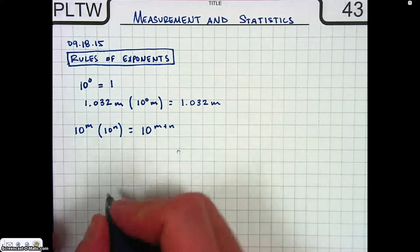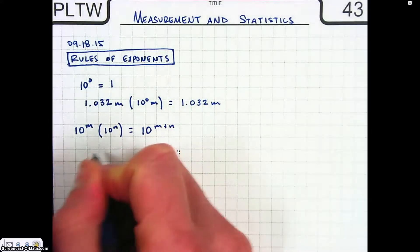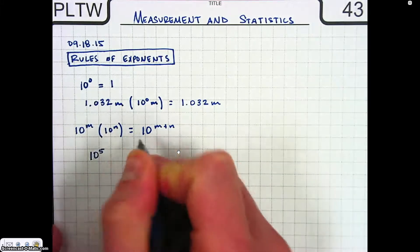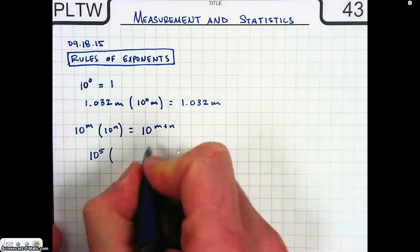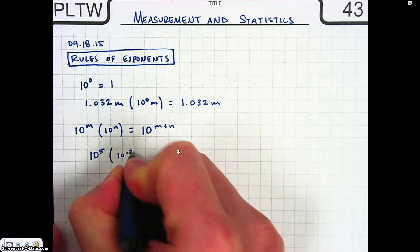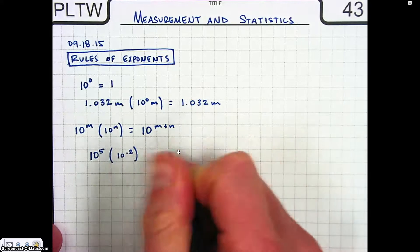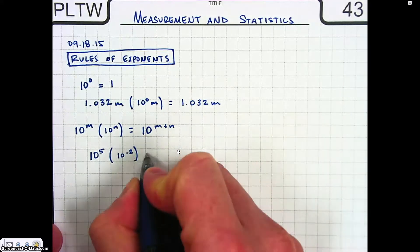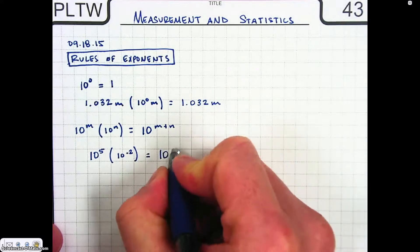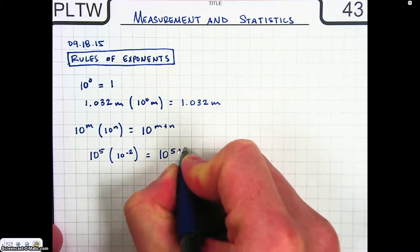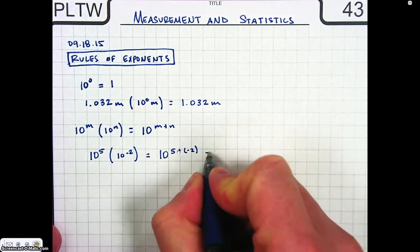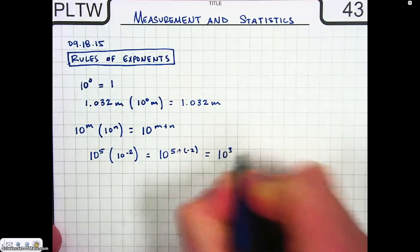So in our example here, let's do real numbers. We have 10 to the 5 times 10 to the negative 2. That equals 10 to the 5 plus that negative 2, which gives us 10 to the 3.